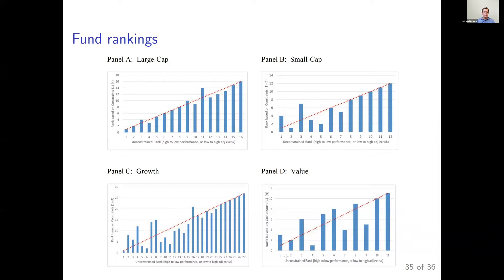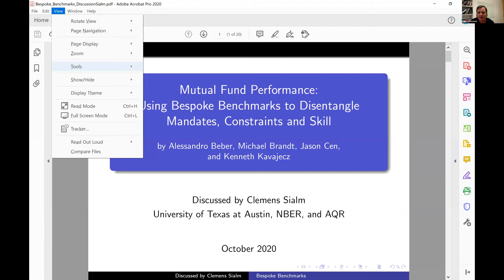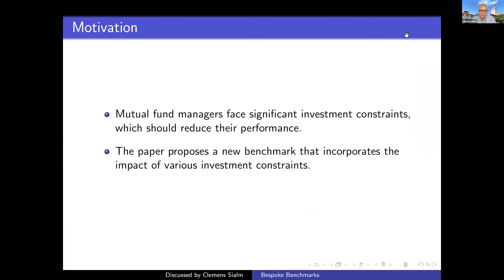Thank you very much, Michael. So we're moving to our discussion. Clemens from UT Austin, you have 10 minutes. I thank the organizers for asking me to discuss this paper. It's a fun paper on an important topic. Mutual fund managers face significant investment constraints which should reduce performance, and this paper proposes a new benchmark that incorporates the impact of those constraints. I have five main comments on the discussion.